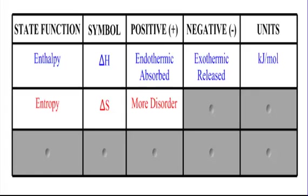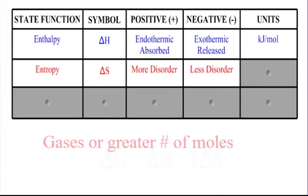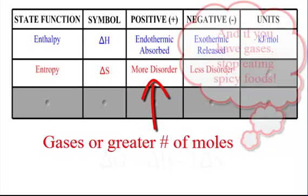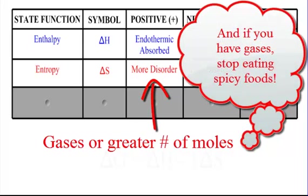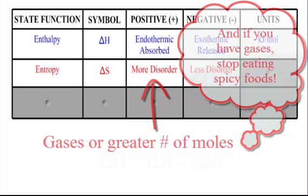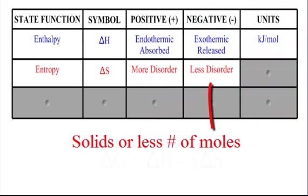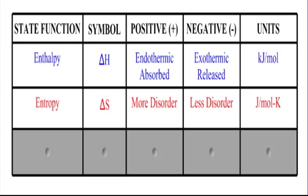Positive delta S means you have more disorder, and negative means you have less disorder. If you have gases or many many moles of something, it's going to be going towards more disorder. If you have a solid, or it's going towards more order or fewer moles, it's less disorder — it's going to be negative. The units for delta S are joules per mole Kelvin.